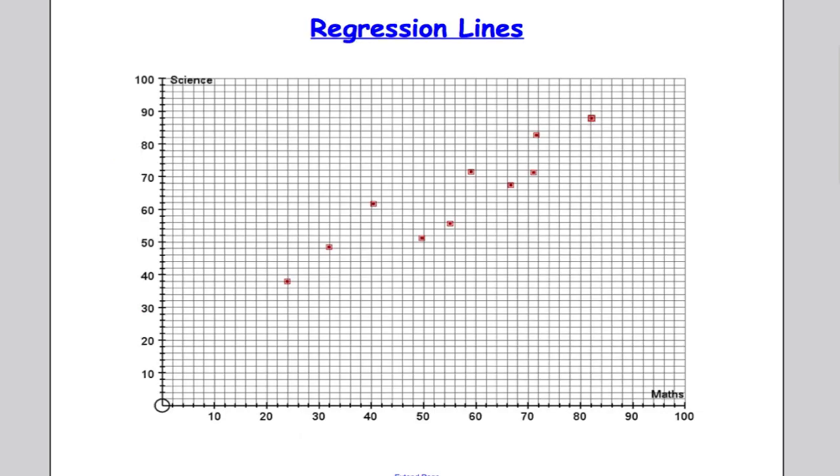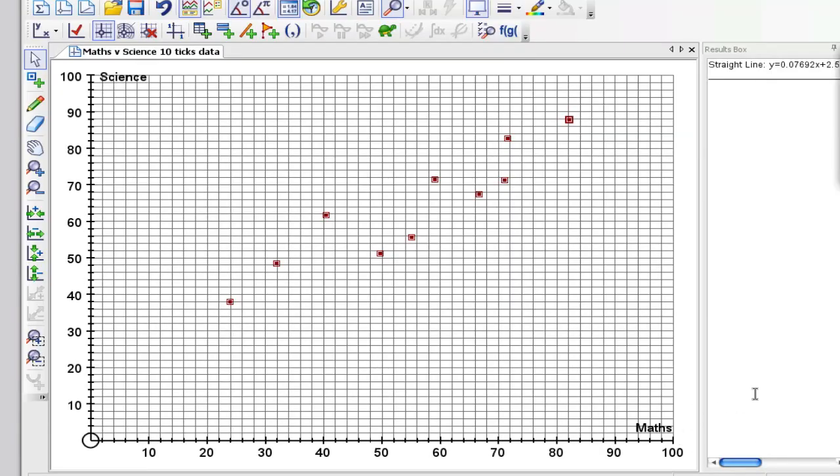Okay now regression lines are essentially lines of best fit and for GCSE you would have done it by eye. So you would have a look and you would try and guess, make a reasonable guess of where the line of best fit would go. For statistics at A level we have to be a bit more sophisticated. So what we are going to work out is what is called the least square regression line.